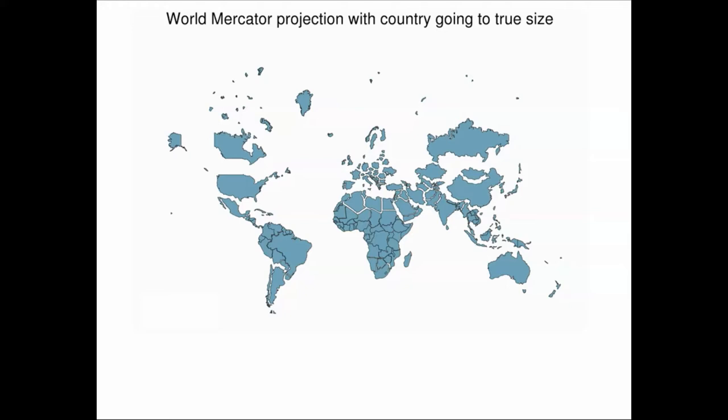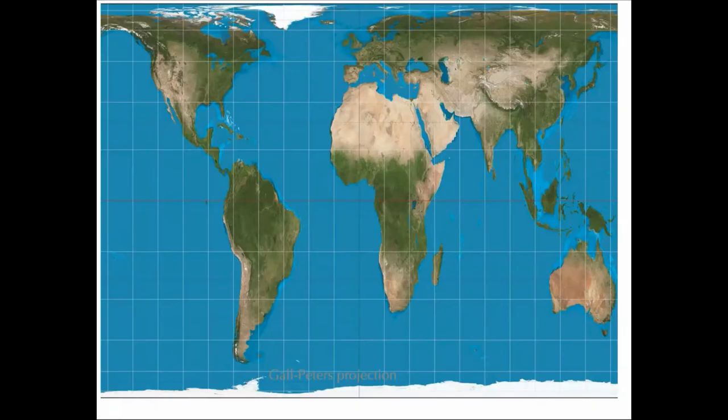The Mercator projection, but representing the country here by their actual relative sizes to one another. This projection here is slowly but surely being used more often in schools. This is the Gall Peters projection.